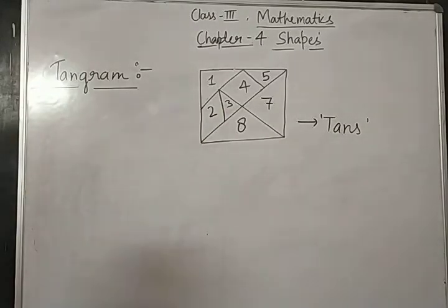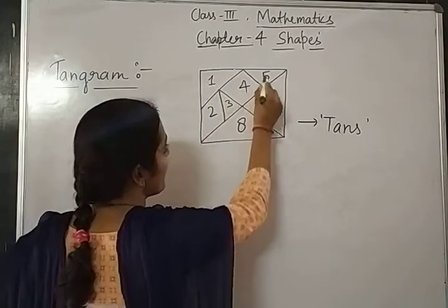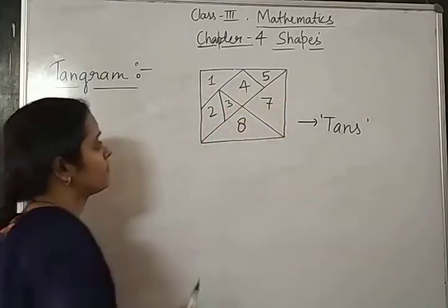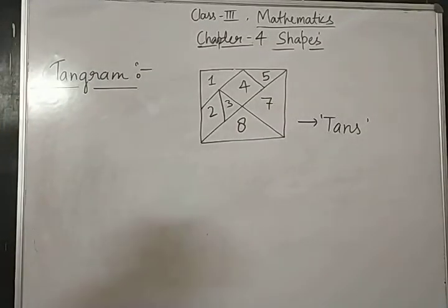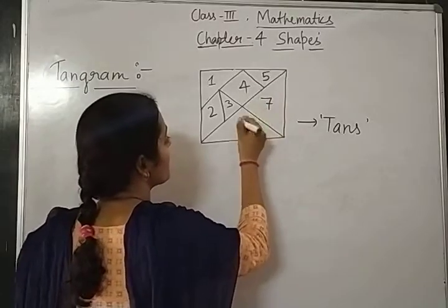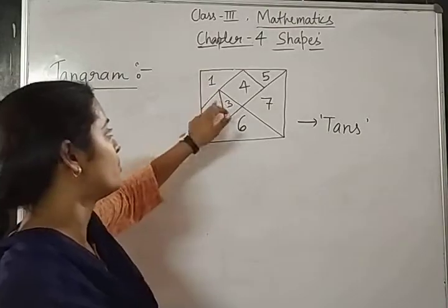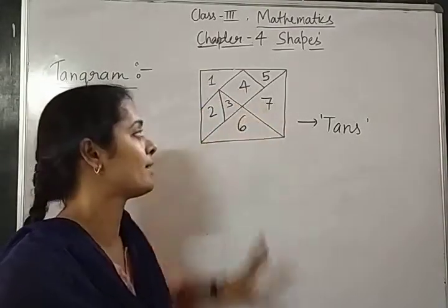This Tangram is an old Chinese puzzle consisting of flat pieces of shapes called tangs. And Tangram have 7 pieces. How many pieces? 7. 1, 2, 3, 4, 5, 6, 7. Students, once again. 1, 2, 3, 4, 5, 6, 7.